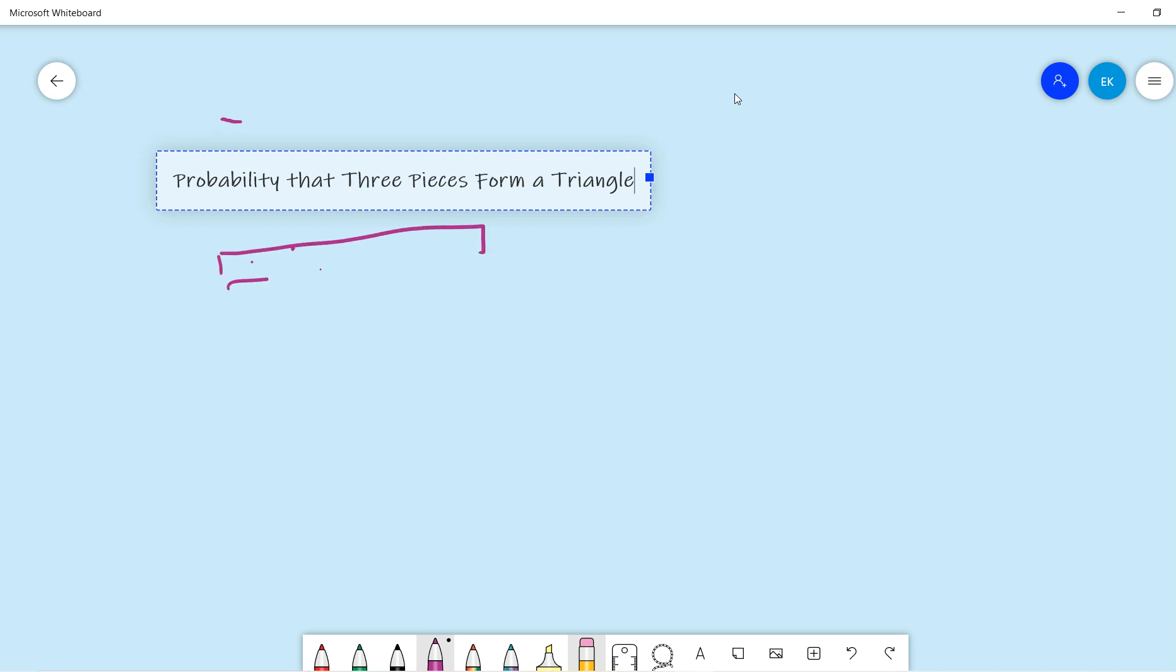So basically the question is you have a stick and you cut it into three pieces. Basically you have x and y and 1 minus x, 1 minus y. And the question is the probability that these three pieces form a triangle.